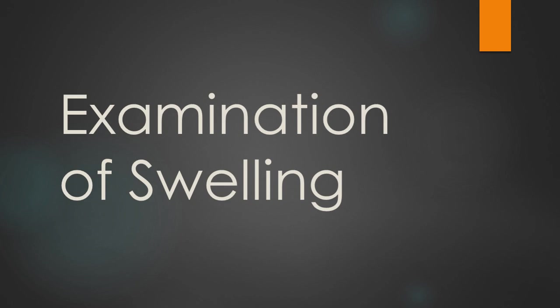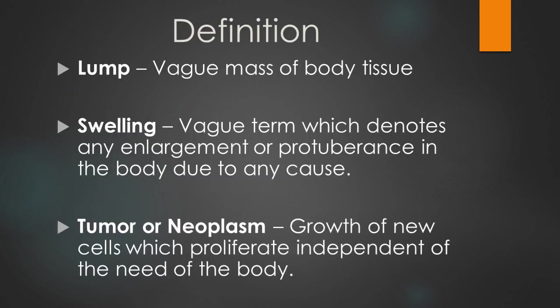Starting with the examination of swelling. A swelling is a vague term which denotes any enlargement or protuberance in the body due to any cause. A lump is a vague mass of body tissue. A tumor or neoplasm is a growth of new cells which proliferate independent of the need of the body. Benign tumors proliferate slowly with little evidence of mitosis and invasiveness to surrounding tissues, whereas a malignant tumor proliferates at a faster rate with invasiveness and mitosis.